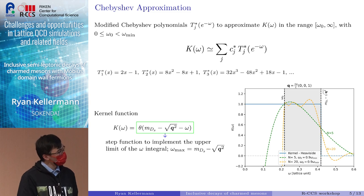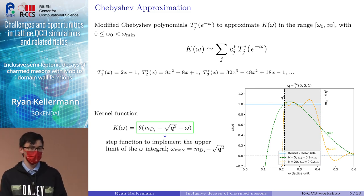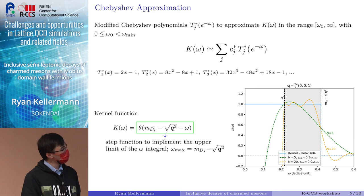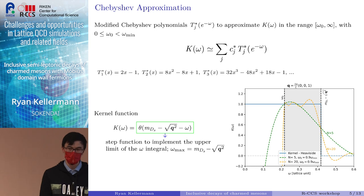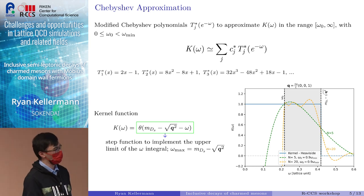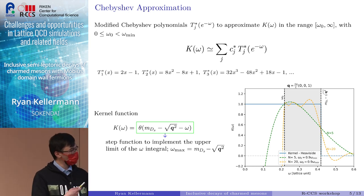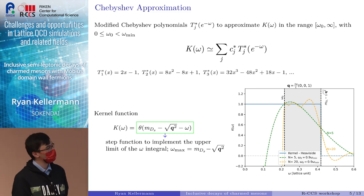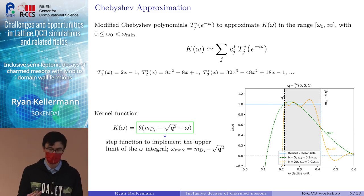This will allow us to easily implement our upper limit of the integral, and this is shown on the right-hand side. Here we have in blue the Heaviside step function and the corresponding Chebyshev approximation for two different choices of polynomial order n: n equals 5 and n equals 20. But at this point you already see a disturbing behavior, which is that if we just increase the order from n equals 5 to 20, we already start seeing oscillations around the threshold.